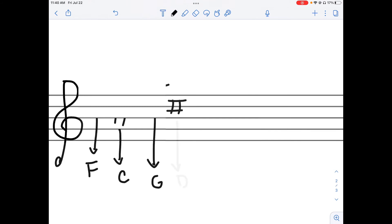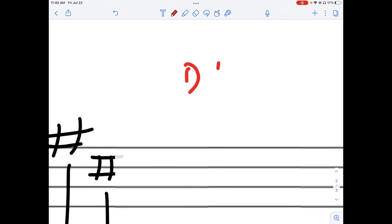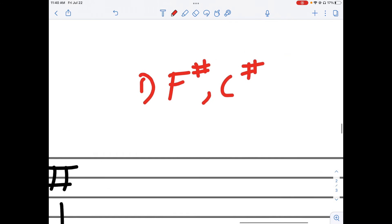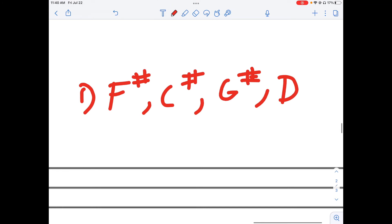All right, so what key would I be in? So the first step is to identify what sharps we have. So we have F sharp, C sharp, G sharp, and D sharp. Now our second step is to identify the last sharp, so for us it would be D sharp.